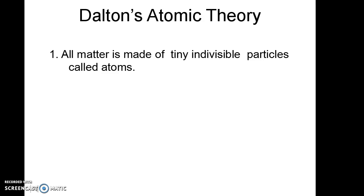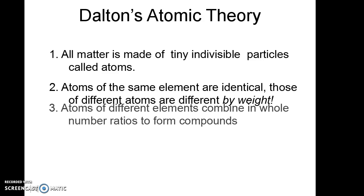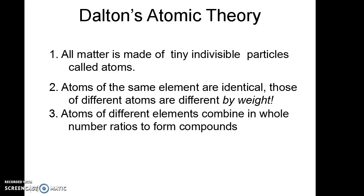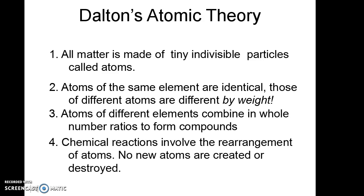The first one, this is, remember, his explanation for all these laws we just looked at. He explained, first of all, that all matter is made of, these four points you need to write down, these are critical. All matter is made of tiny indivisible, that does say indivisible or uncuttable, not invisible particles called atoms. And atoms of the same element are identical, but those of different atoms are different because they have different weights. Atoms of different elements combine in a whole number of ratios to form compounds. And chemical reactions involve the rearrangement of atoms, and no new atoms are created or destroyed. If you're reading carefully, you can sort of see some of those laws kind of restated in atom terms in those four points.